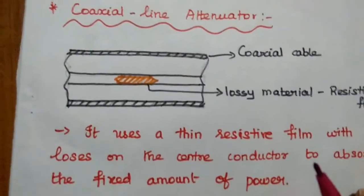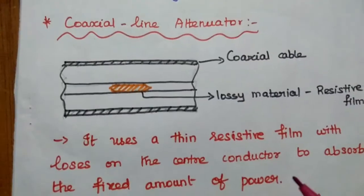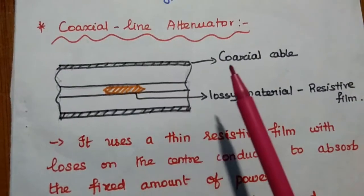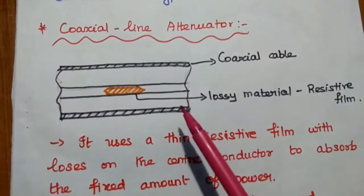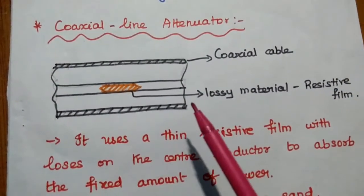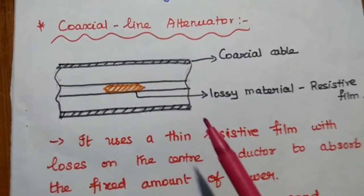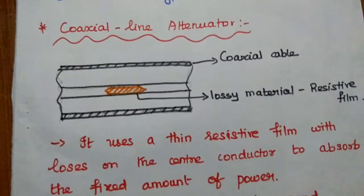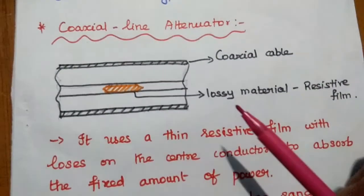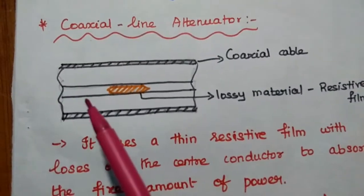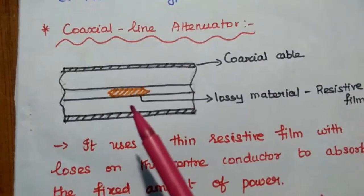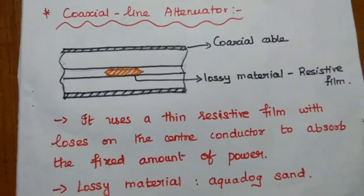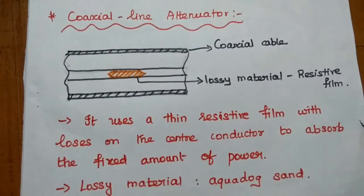Let's start with the coaxial line attenuator. The coaxial line attenuator is a fixed type of attenuator. As we know, the coaxial cable has two conductors — one is the outer conductor, another one is the inner conductor. In this coaxial cable, we place one lossy material in the form of a thin resistive film in the center of the center conductor. By using this lossy material, whatever microwave power is flowing through this cable, some of the energy is absorbed by this lossy material, providing a fixed attenuation to the incoming signal.